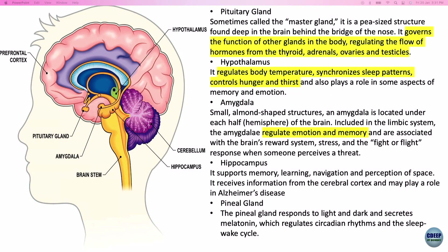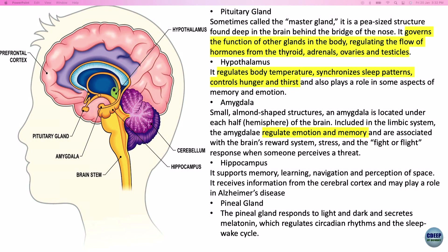The diencephalon includes the pituitary gland — a pea-shaped structure found deep in the brain behind the bridge of the nose, sometimes called the master gland. It governs the function of other glands in the body, regulating the flow of hormones from the thyroid, adrenals, ovaries, and testicles. The hypothalamus regulates body temperature, synchronizes sleep patterns, and controls hunger and thirst. It also plays a role in memory and emotions.